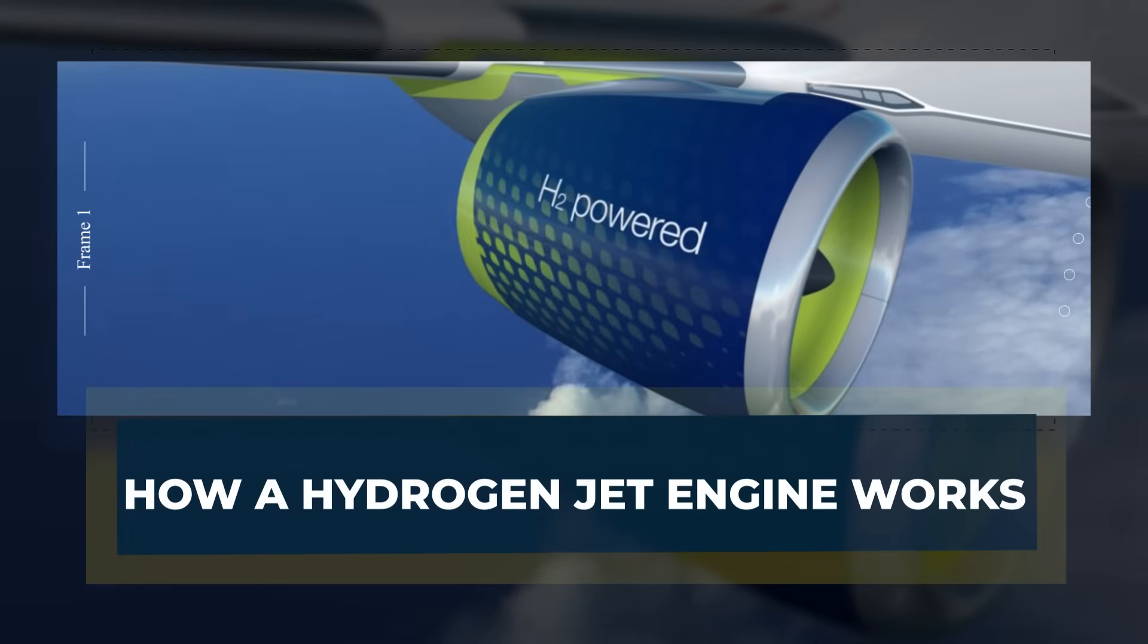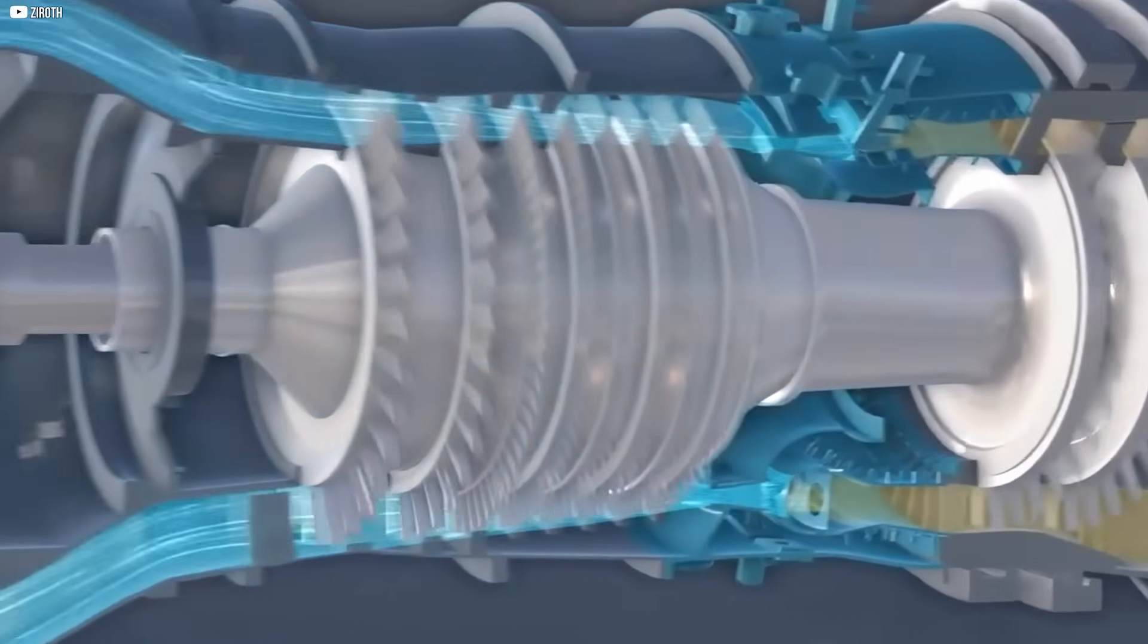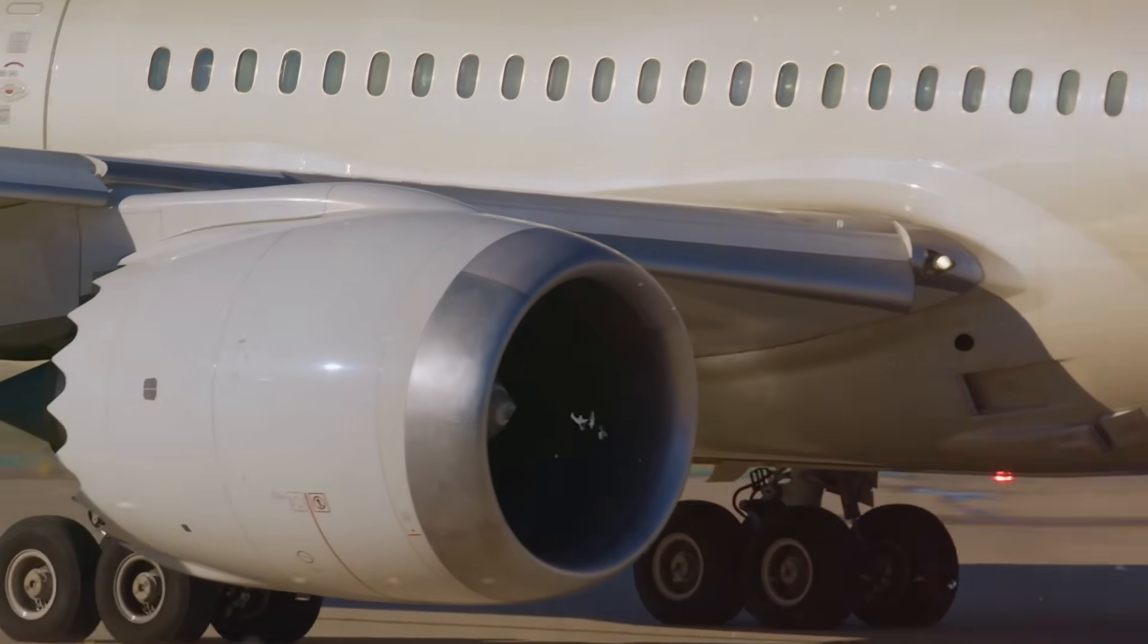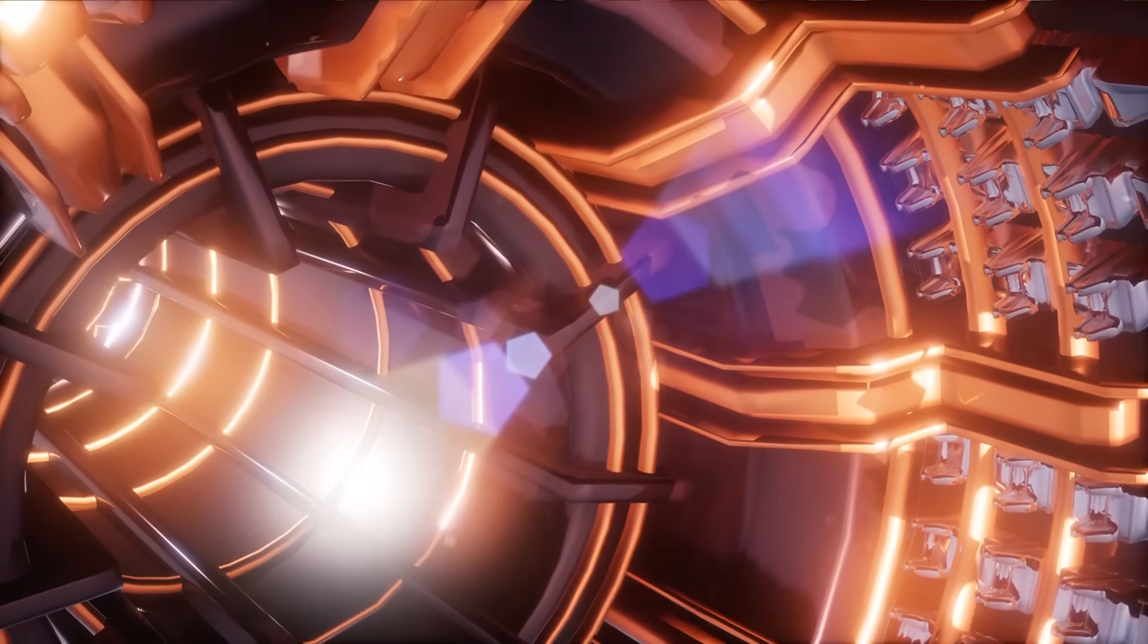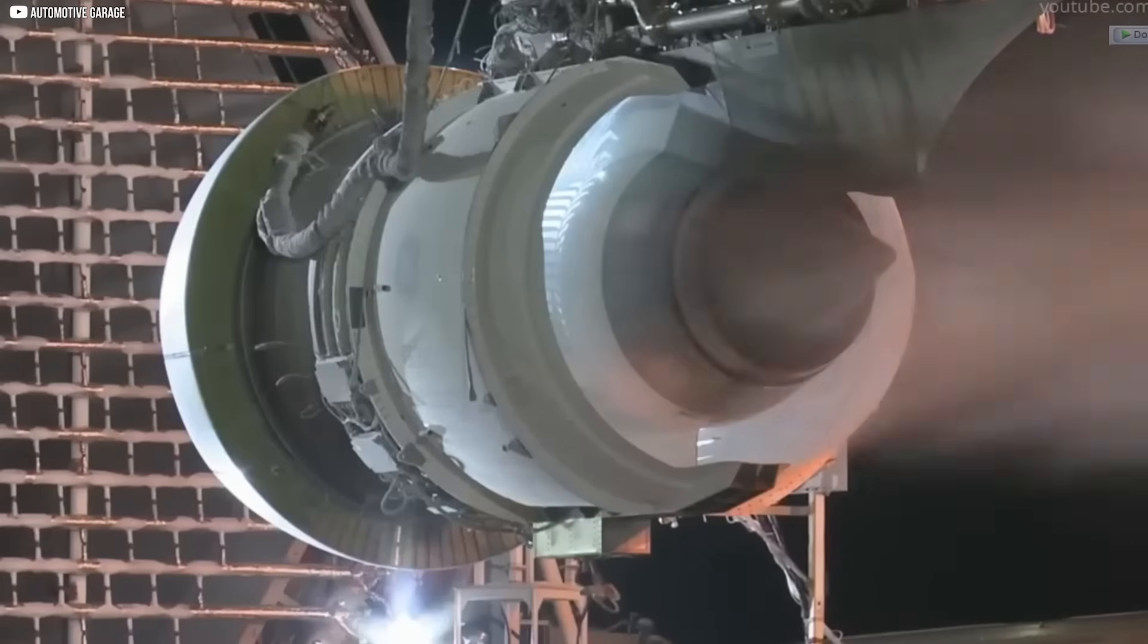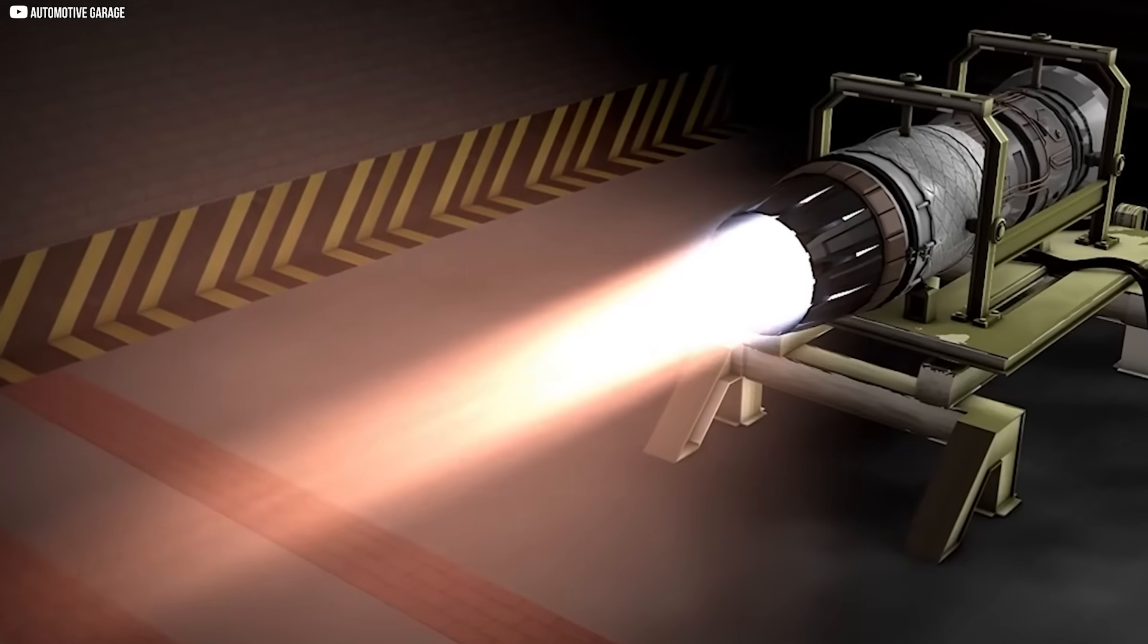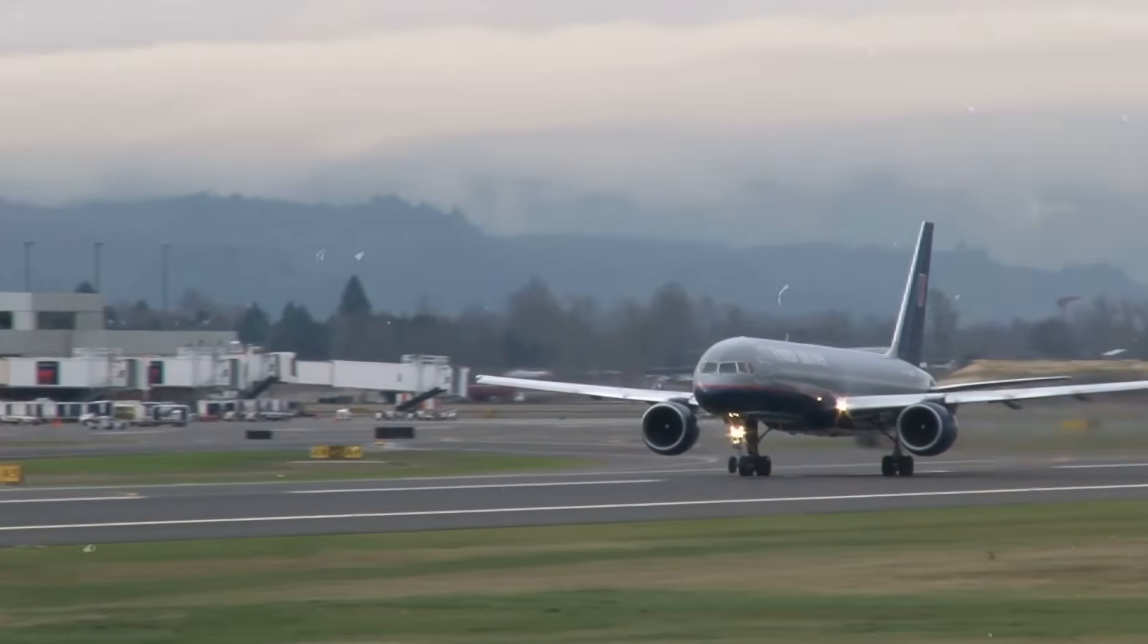How a hydrogen jet engine works. At its core, the hydrogen jet engine operates much like traditional jet engines. Air rushes in at the front, compressed by spinning blades. Hydrogen fuel is then injected into the combustion chamber, where it mixes with the compressed air and ignites. The burning hydrogen releases hot, fast-moving gases that shoot out the back, producing thrust to propel the plane forward.